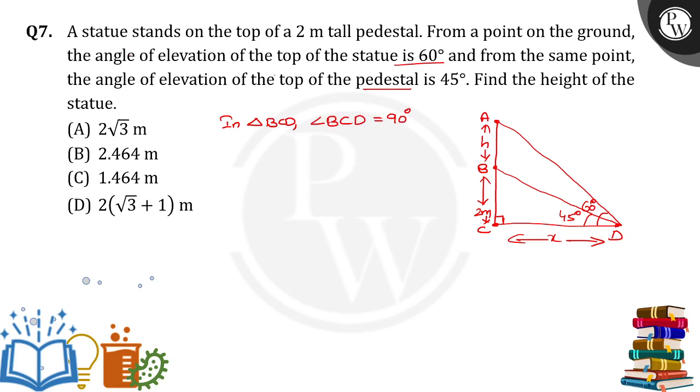So we can get the value of X by using tan application here. So tan 45 is equal to opposite side BC by adjacent side CD. So 1 is equal to 2 by X. So from this we will get X is equal to 2 meter.